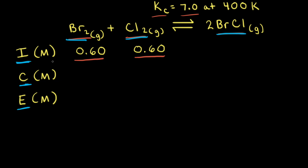For the initial concentrations, we have 0.60 molar for bromine, 0.60 molar for chlorine, and if we assume the reaction hasn't started yet, then we're going to put a zero in here for our product, BrCl.